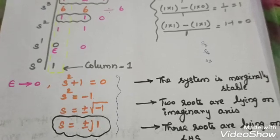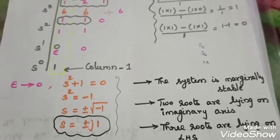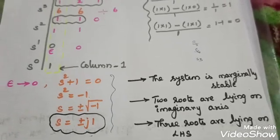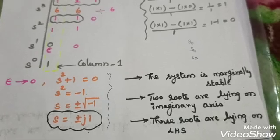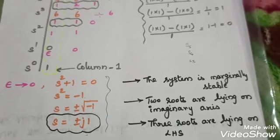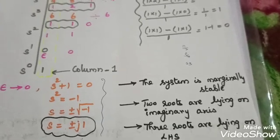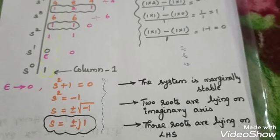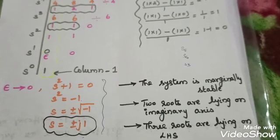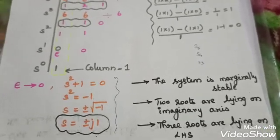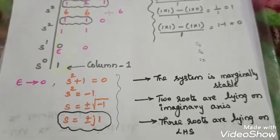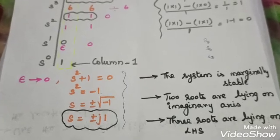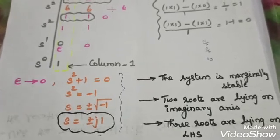The system is stable — or rather, the system is marginally stable. There are five roots total: two roots are imaginary, and the remaining three roots are on the left-hand side. So conclude. In this video, this will be useful. Thank you for watching.